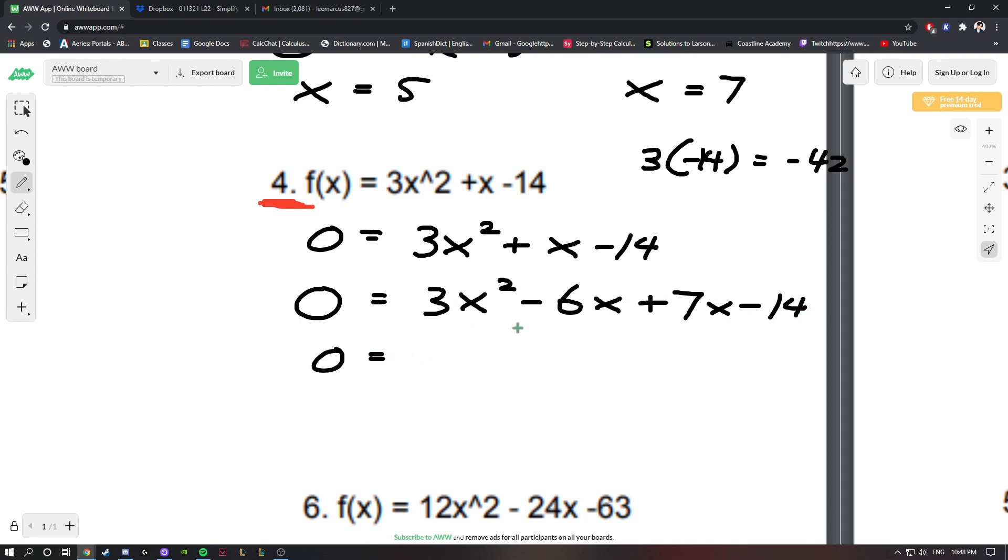If we do that properly, we get 6 and 7. Among these two terms we could factor out common values, and the same thing with these two terms. We could factor out a 3x here and we're left with (x - 2). We could factor out a 7 and we're left with (x - 2).